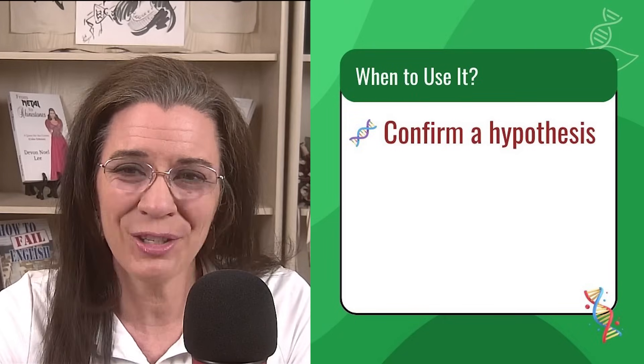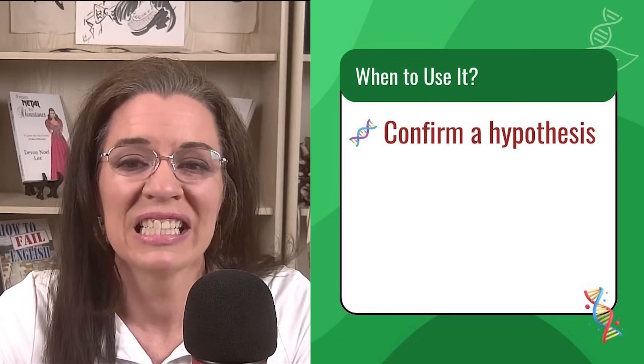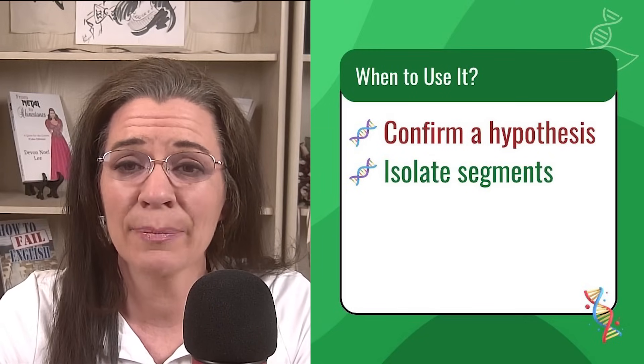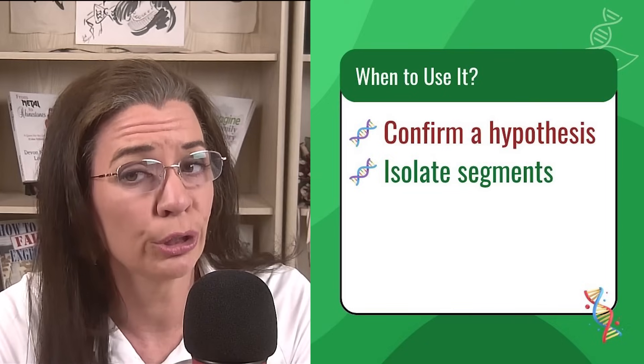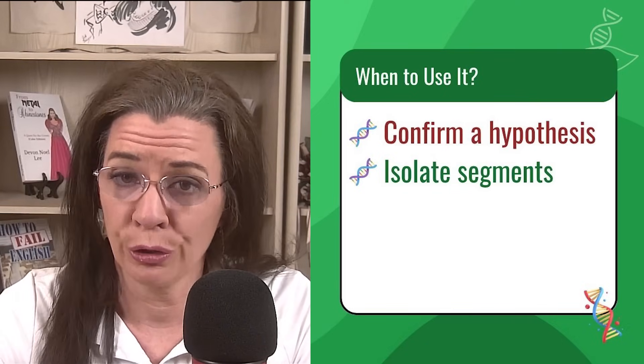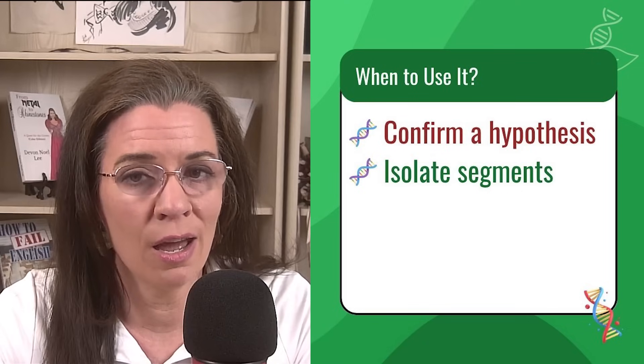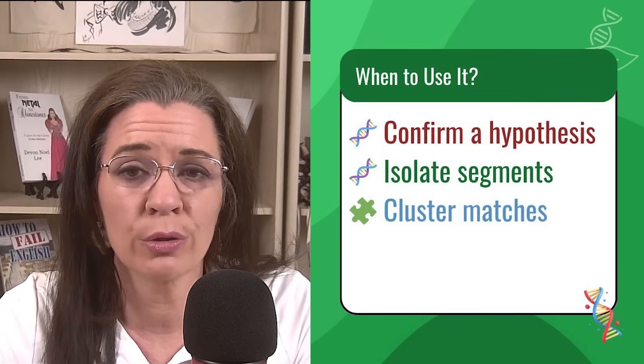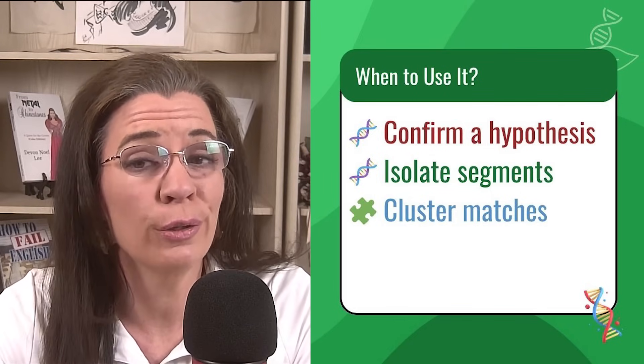So when should you actually use the chromosome browser? For the most success, use it to confirm a hypothesis. Do you think two matches are from the same family line? See if they triangulate — see if they match on the same segment. Isolate segments by side: do you have a known maternal cousin or a known paternal one? Use those known matches to label segments as mom's side and dad's side. Use the browser to spot people who share the same segment — that's a clue that they're part of the same genetic line.